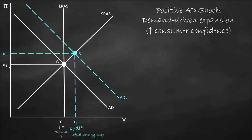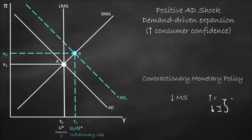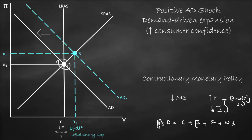What if the RBA decided to use a monetary policy? We use a contractionary monetary policy to return to our original equilibrium by decreasing the money supply and increasing interest rates. If interest rates increase, investment will decrease because of the negative relationship between interest and investment — which we call crowding out. Our aggregate demand formula equals C plus I plus G plus NX. If investment goes down, aggregate demand goes down and shifts to the left. We return to our original equilibrium at point A, with potential output at the natural rate of unemployment and inflation level 1.